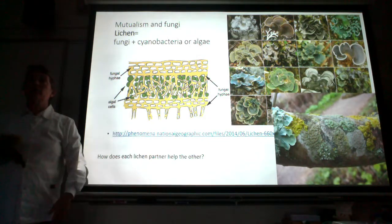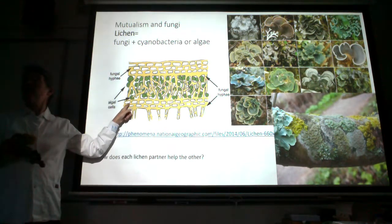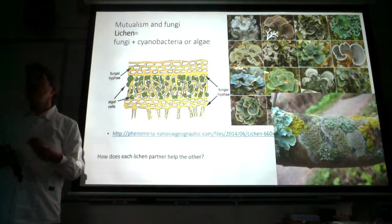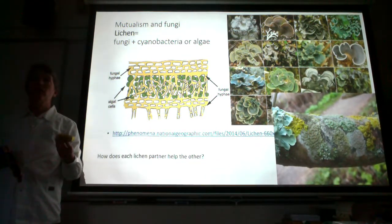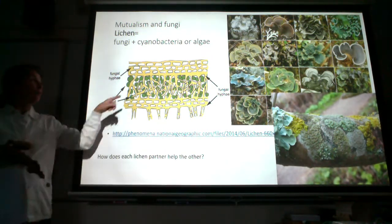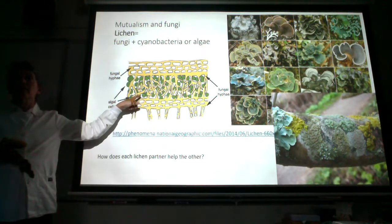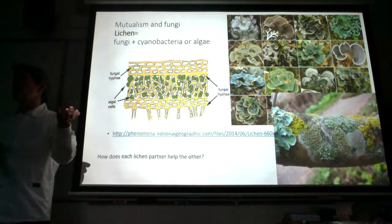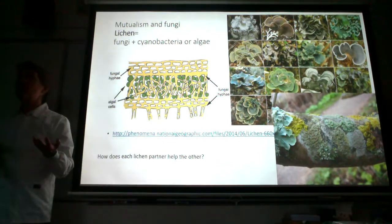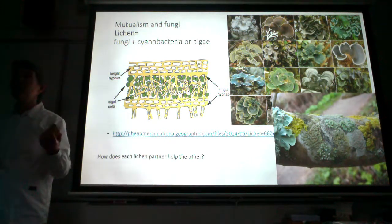The photosynthetic partner is a photoautotroph, but the fungus is a chemoheterotroph — it needs preformed organic molecules as a source of energy and carbon. The photosynthetic partner makes sugars by photosynthesis and feeds those sugars to the fungi, which can then use them as a source of carbon and energy. It's a really cool relationship.